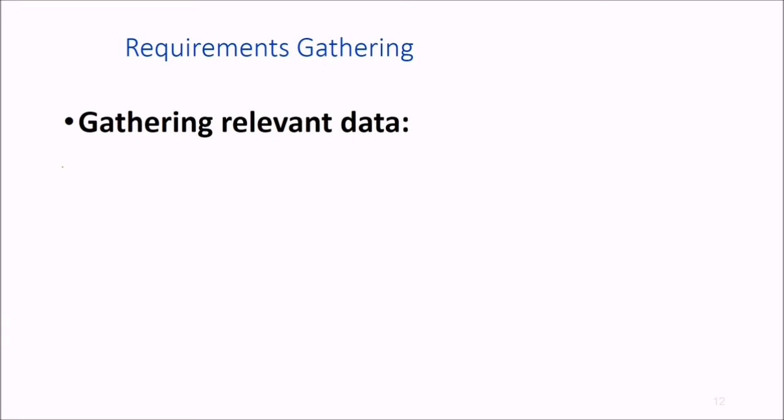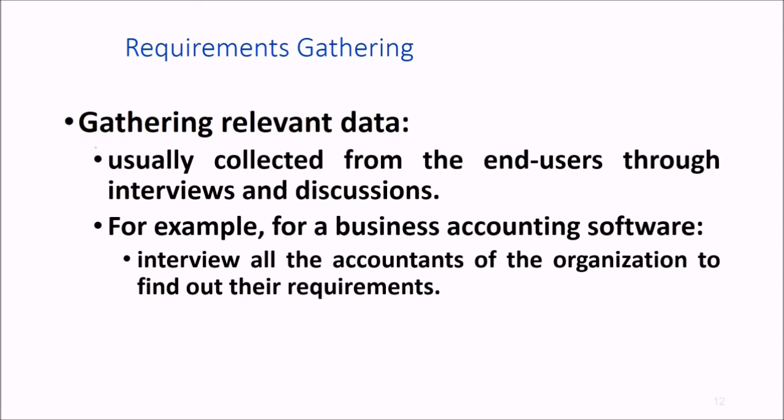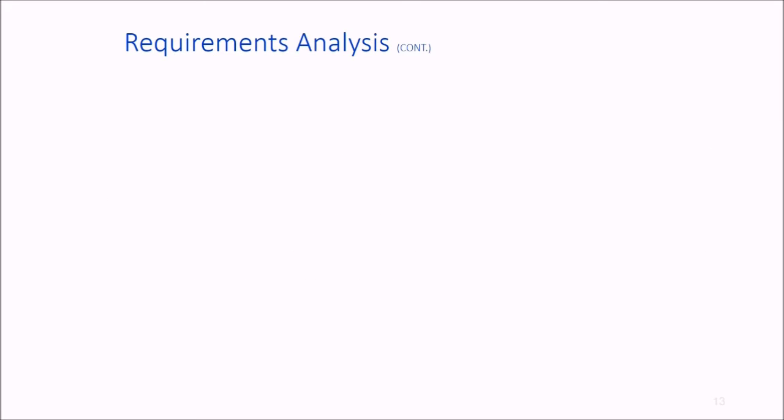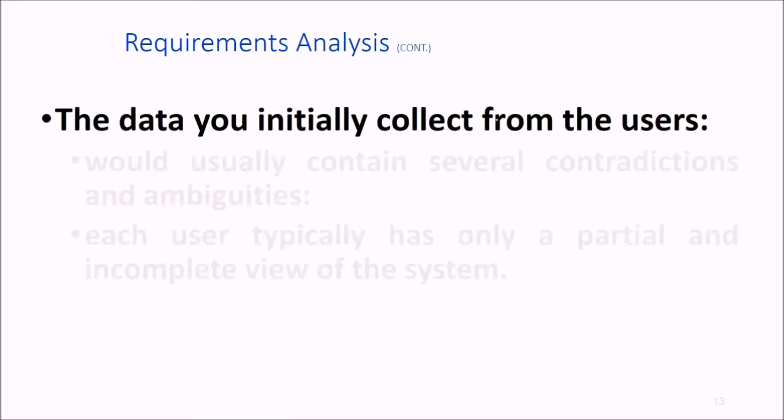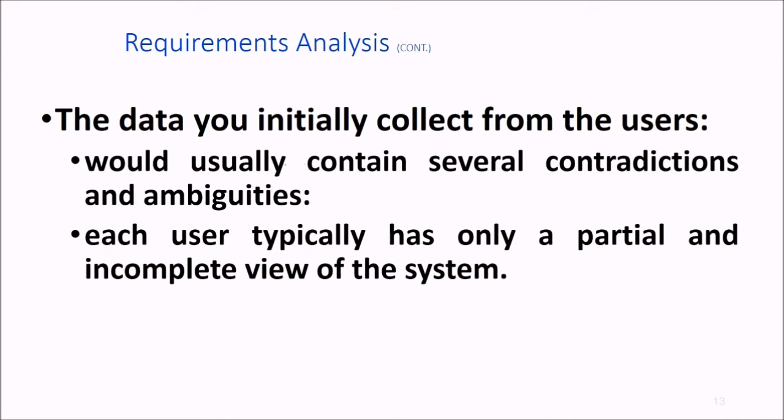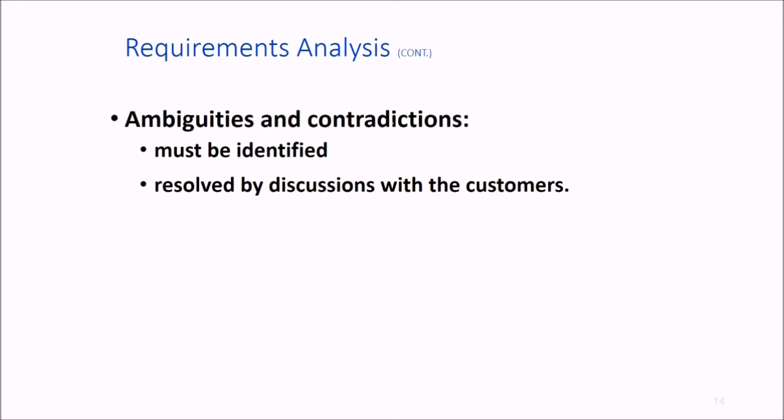Then comes the requirements gathering part. Relevant data is usually collected from the end users, maybe through in-person discussions or interviews. For instance, in a business accounting software, all accountants are interviewed to find out their requirements and thoughts. The data you initially collect from the end users may have various contradictions and may be ambiguous. Each user typically has only a partial idea or view of the system, so these ambiguities and contradictions must be identified and resolved.